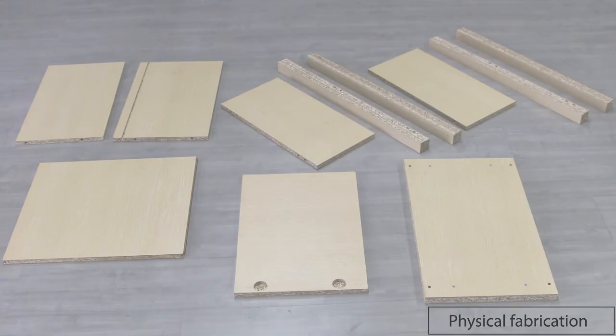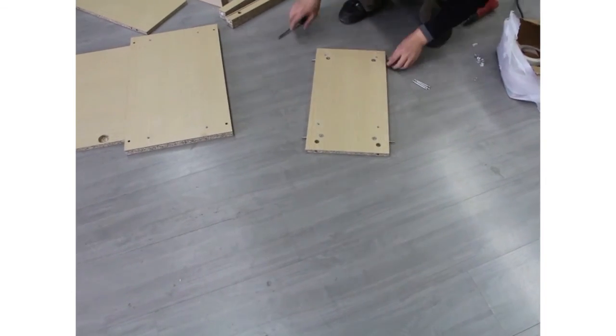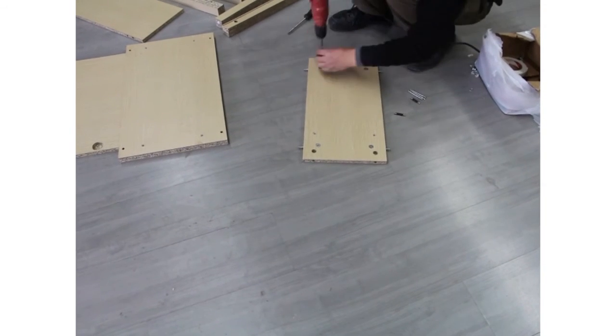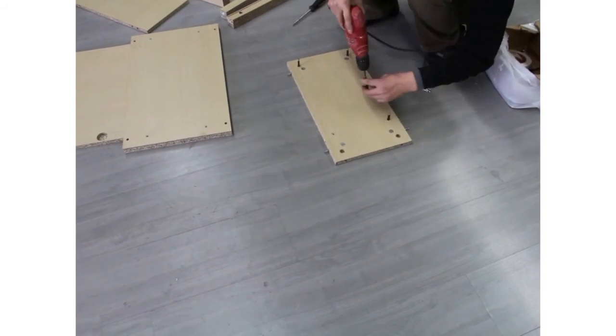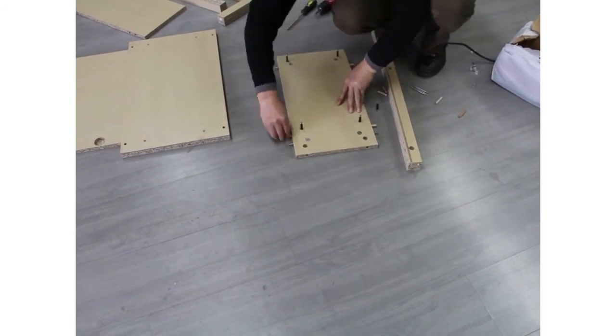Secondly, we physically fabricate the furniture. After measuring the size in 3D, we use a board cutting machine to cut the wooden boards into furniture parts and assemble them using real mechanical connectors.